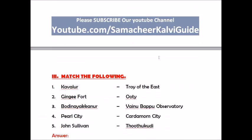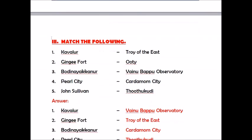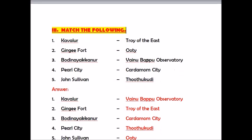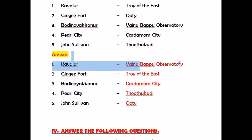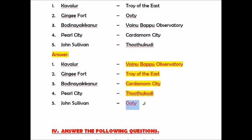Roman number three: Match the Following. Kaavalur — Vainu Bapu Observatory; Jinji Fort — Troy of the East; Bodhi Naikanoor — Cardamom City; Pearl City — Tuticorin; John Sullivan — Ooty.